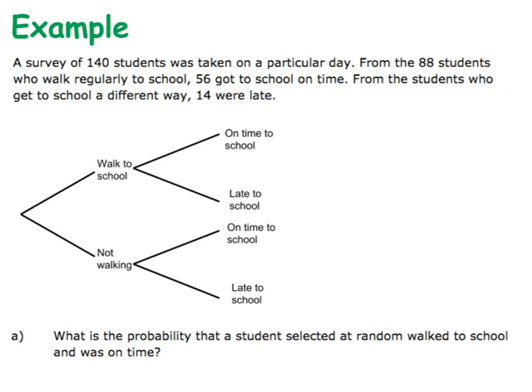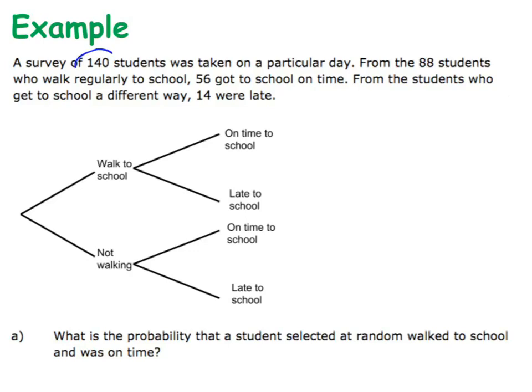Let's have a look at this one. I've given you the diagram to get you started. The first decision the student makes is: am I going to walk to school or not? The second event that happens is either they are on time or they are late. I need to read through and get some information. We're told there are 140 students surveyed, and from the 88 students who walk regularly to school...